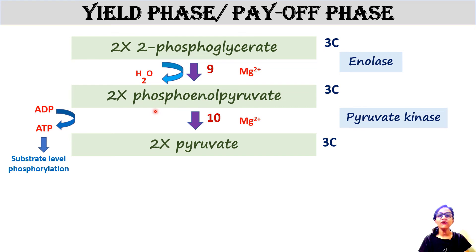Each molecule of phosphoenolpyruvate is converted into pyruvate by the enzyme pyruvate kinase, with magnesium as a cofactor. This reaction generates one molecule of ATP because the kinase transfers one phosphate group from phosphoenolpyruvate to ADP, converting ADP to ATP, with pyruvate as the byproduct. This is also a substrate-level phosphorylation.